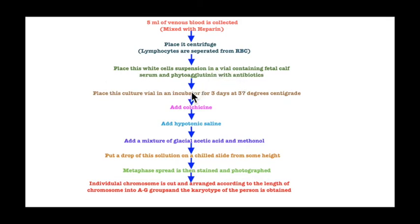After that, we place this culture vial in an incubator for three days at 37 degrees centigrade. At this stage the cells repeatedly undergo divisions. After three days we remove the vial and add colchicine. The function of colchicine is mainly to prevent cell division at the stage of metaphase and to prevent the formation of spindle fibers.